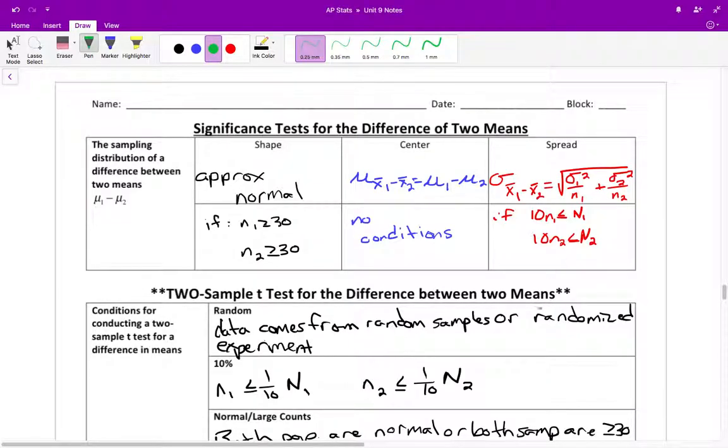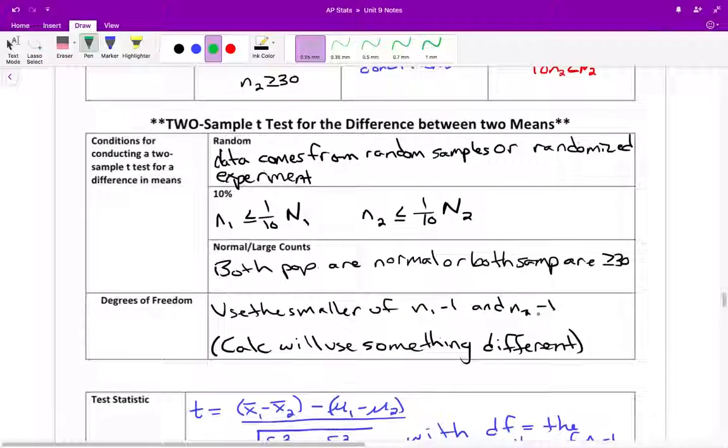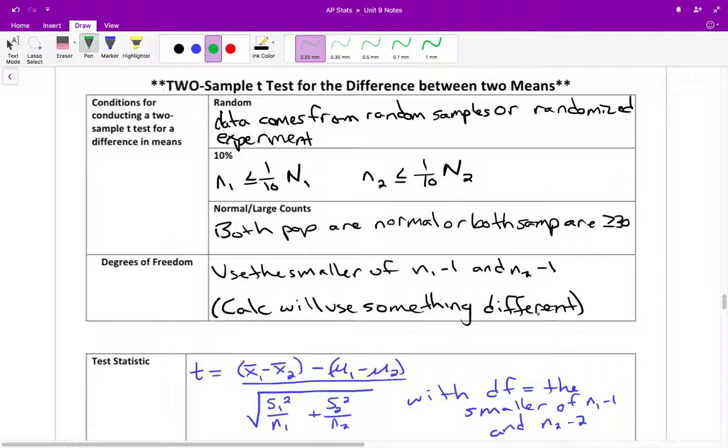So what we are going to focus on today is how to do a two-sample t-test for the difference between two means. The conditions that you need to check, very similar to the ones that were just up above. When you're checking that it's random, make sure that your data comes from a random sample or some kind of a randomized experiment.